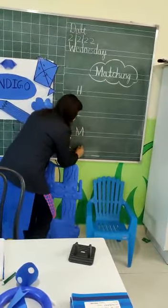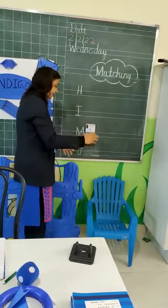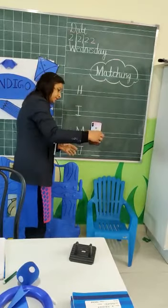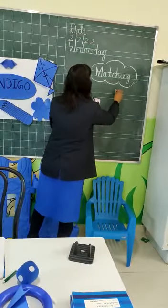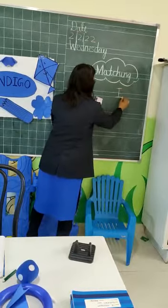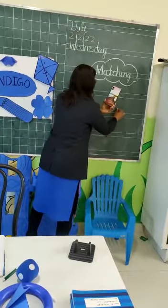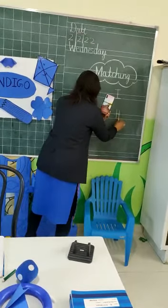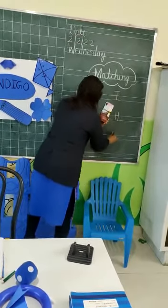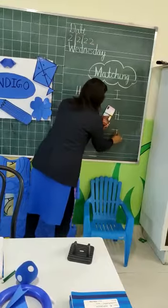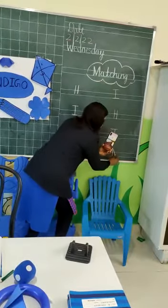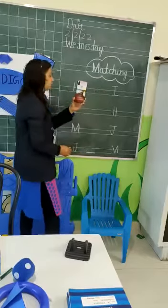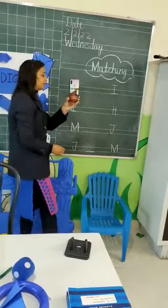Which letter is this? J. C. Okay. Now, here are also some letters: I, H, and which letter is this? J. And M. So we will match the same letter.